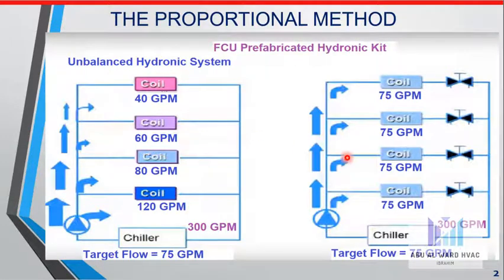While the furthest unit will get only 40 GPM. If we are doing the balancing, if we have balancing valves in this unbalanced system, we will actually get the right and targeted flow for each coil.